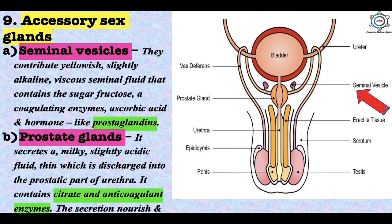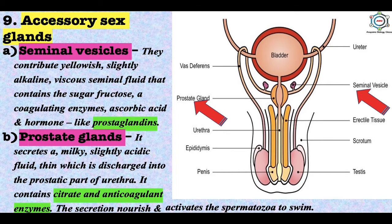Next is the prostate gland. It secretes a milky, slightly acidic thin fluid discharged into the prostatic part of the urethra. It contains citrate and anticoagulant enzymes, and its secretion nourishes and activates spermatozoa to swim. The prostate gland surrounds the first portion of the urethra and resembles a chestnut in shape — spongy and lobulated.